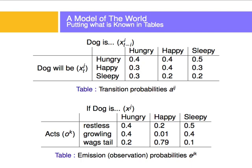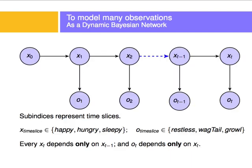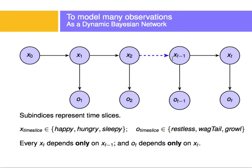I'll model this as a dynamic Bayesian network. I know that observations depend only on the state of the dog. At time step 1, state 1 produces observation 1. At time 2, the state depends on the previous state (shown by the arrow), and the observation at time 2 only depends on the state at time 2. This extends for however many observations I have. The subscripts represent time slices; the state x can be happy, hungry, or sleepy; observations can be restless, wag-tail, or growl.